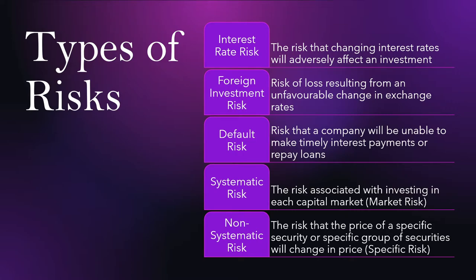Systematic risk is the risk associated with investing in each capital market — it is also called market risk. It is important to differentiate this from non-systematic risk, which is the risk that the price of a specific security or group of securities will change. Systematic risk refers to the whole market risk — the broader macroeconomic factors affecting it — whereas non-systematic risk is more about individual factors for a specific company or specific industry.